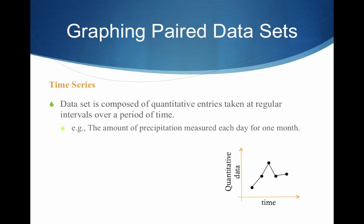All right, lastly, we want to talk here about graphing paired data sets as a time series. A data set is composed of quantitative entries taken at regular intervals over a period of time. The amount of precipitation measured each day for a month, for example. So, again, our x-axis is time, and our y-axis is what we're measuring, or the quantitative data.